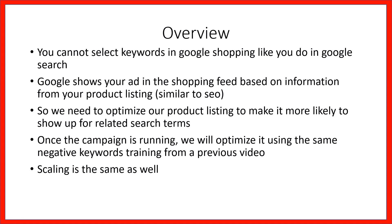With Shopping, Google shows your ad in the shopping feed based on information from your product listing. It's kind of similar to SEO — search engine optimization. Google Shopping determines when to show your product in the feed based off your product title, description, and things like that. So what we need to do is optimize our product listing to make it more likely to show up for related search terms, which we'll get into in a later video.